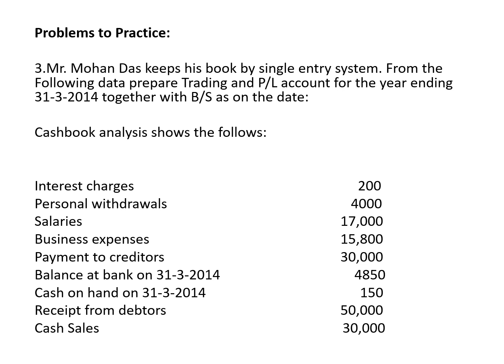As on 31st March 2014, the cash book analysis shows the following: interest charges — record one entry in the cash account and one in the P&L account. Personal withdrawals of 4,000 — nothing but drawings — will be taken to cash account and adjusted in the balance sheet. Salary 17,000 — indirect expense, goes to P&L account and cash account. Business expenses — indirect, cash account and P&L account. Payment to creditors — one entry in cash account and one in creditors account.